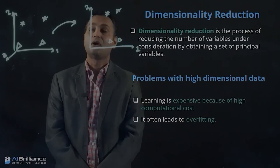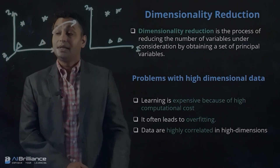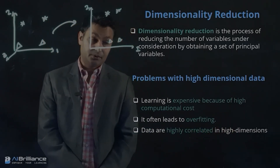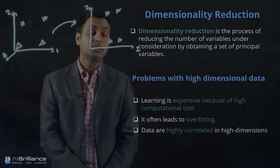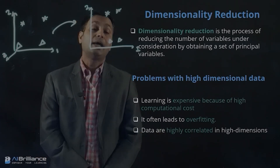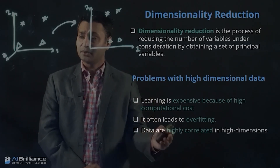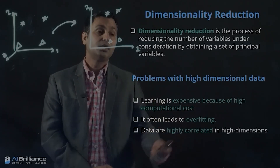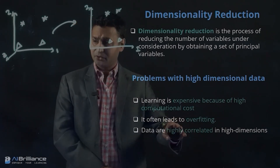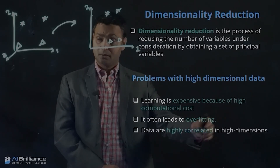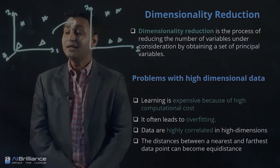Another issue is that data in higher dimensions are often highly correlated. There is a high possibility that if you have high-dimensional data, the data might be correlated. You can decorrelate it by doing dimensionality reduction. This is something we will revisit when talking about PCA, which is one of the main ways to perform dimensionality reduction.